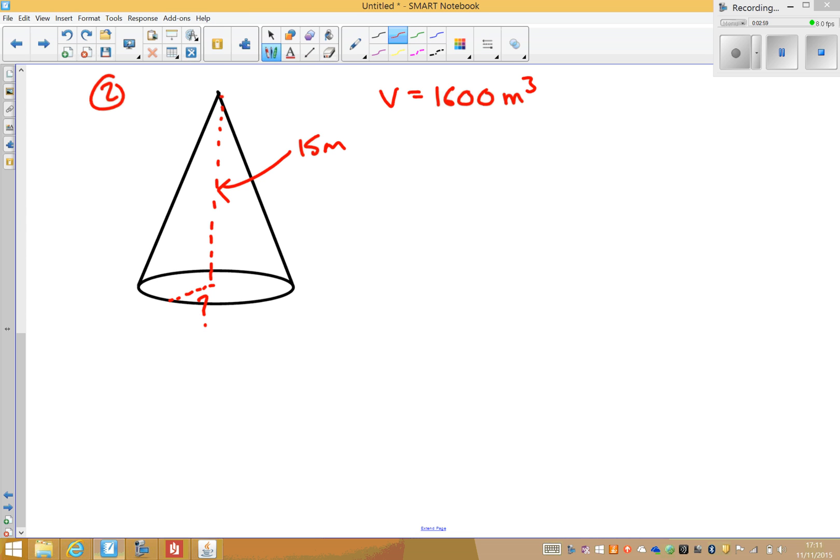So start the question in exactly the same way. We know the formula. It's in our formula booklet, so it's on the formula page in the front of the exam. So a third pi r squared h.